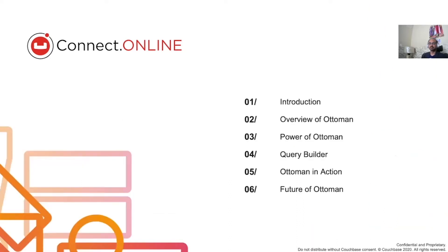Let's now look at the agenda for today. We'll be looking at some of the basic concepts on how data is stored and retrieved within Couchbase. As an overview, we will learn about what an Object Document Mapper or ODM is and what are the benefits of using an ODM. Next, we'll take a comprehensive look into elements and powerful features of Ottoman, such as schema, models, documents, and more. We'll also talk about how to build database queries in a more simple and yet elegant way. You'll see all of this in action as Eric will steer us through a demo. Finally, you'll also witness the future of Ottoman and why you should stay invested.